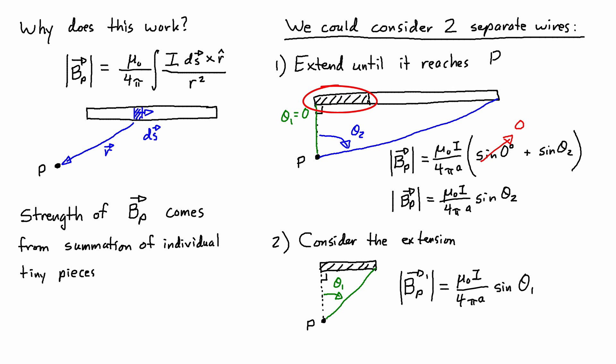Now, since the extension was an artificial thing I added, that wasn't part of the wire originally, what I'm going to do is consider the total that I found in the first wire with the extension, and then subtract the extension from that one. Since I added the extension artificially, I can subtract the extension, which was the second wire, from the extended wire, which was the first wire.